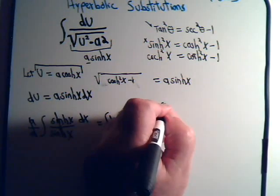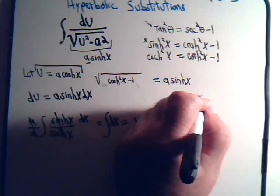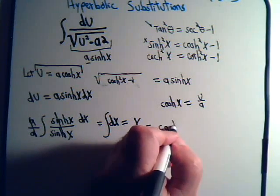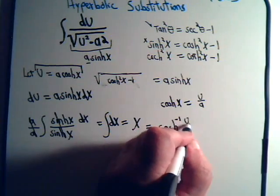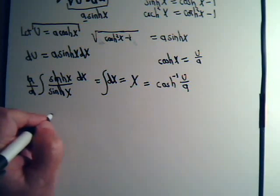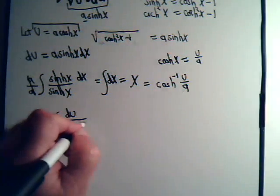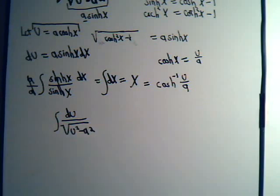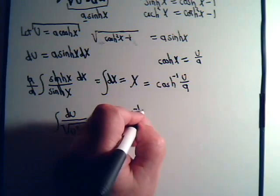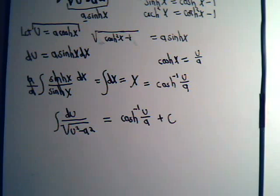Now we go back to our original substitution. Since u equals a times the hyperbolic cosine of x, the hyperbolic cosine of x equals u divided by a, so x equals the inverse hyperbolic cosine of u over a. Therefore, the original integral equals the inverse hyperbolic cosine of u over a plus an arbitrary constant of integration. That's the end of the problem.